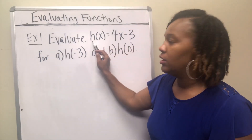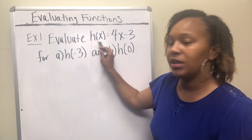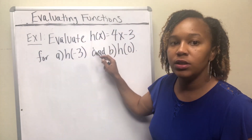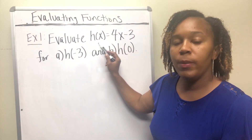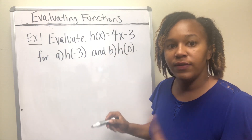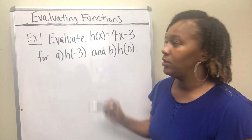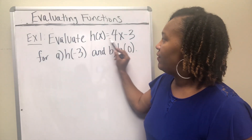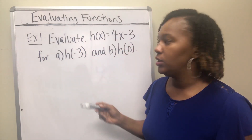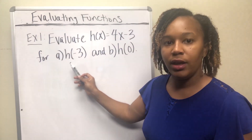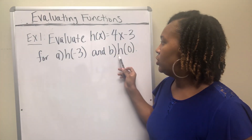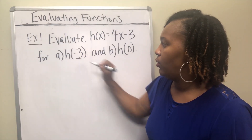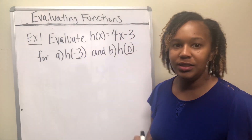Here I have a function with the name h. This reads h of x equals 4x minus 3. x is the input variable, and h of x is the same as y, so this could also be written as y equals 4x minus 3. If I want to evaluate this function, I'll find h of negative 3 and h of 0 — replacing the input variable with negative 3 and 0, respectively.